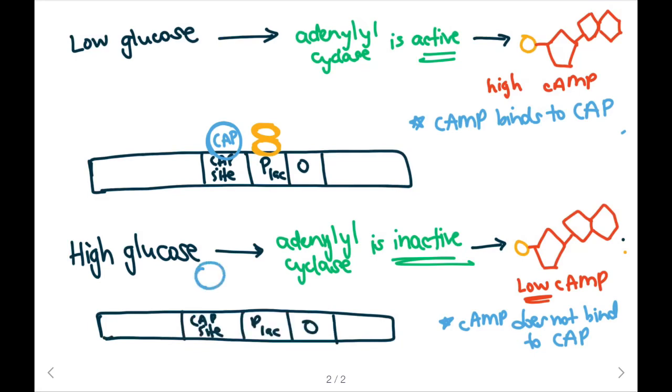Our CAP site is not bounded but RNA polymerase can still bind to the promoter. So RNA polymerase will bind loosely and transcription will occur.